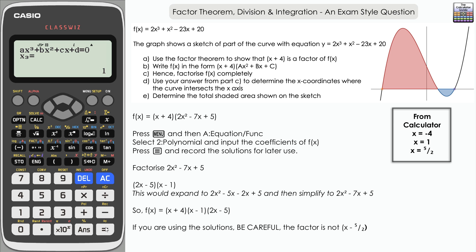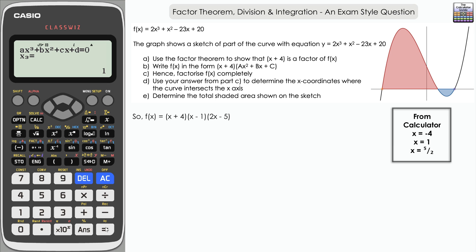Part D: find the x-coordinates of intersection with the x-axis using Part C. Set each factor equal to zero: x+4 = 0 gives x = -4 (furthest left on the graph). x-1 = 0 gives x = 1. And 2x-5 = 0, adding 5 then dividing by 2, gives x = 5/2. These match the calculator solver results, confirming the x-coordinates of the intercepts with the x-axis.